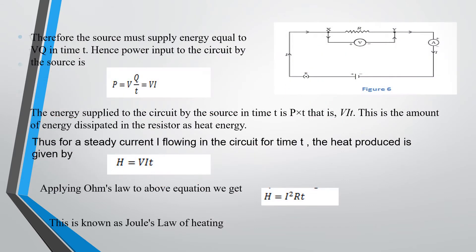The source must supply energy equal to V times Q in time T. Then power can be written as P equals V times I, or V times Q by T. Power equals work by time, as we studied in class 9. We can relate power equals VQ by T, where Q by T is nothing but current. Energy supplied to the circuit by source in time T is VIT. This is the amount of energy dissipated in the resistor as heat energy. Thus, for steady current I flowing in the circuit, the heat produced is given by H equals VIT.